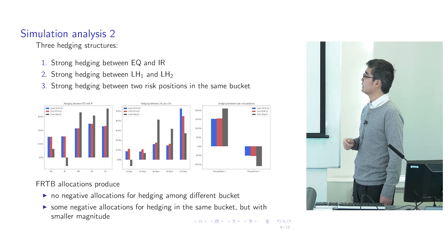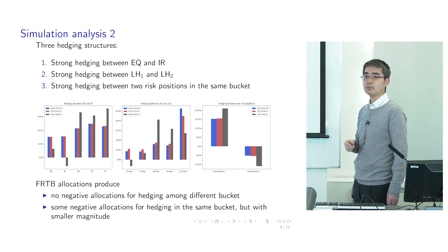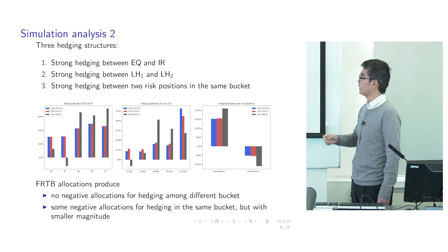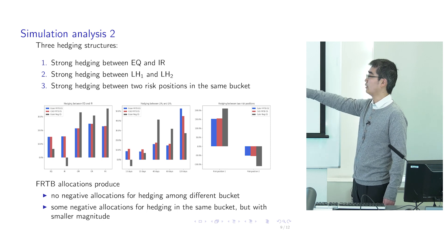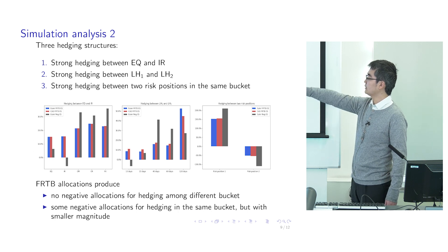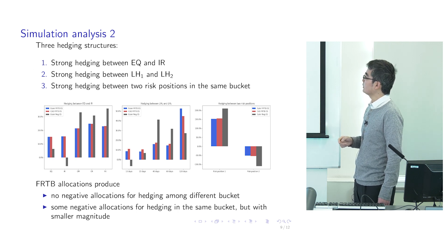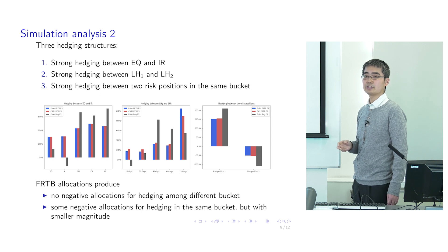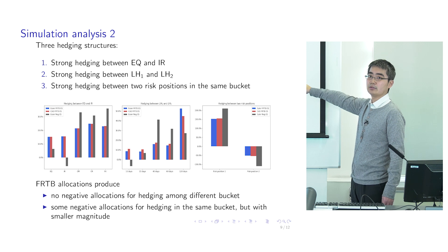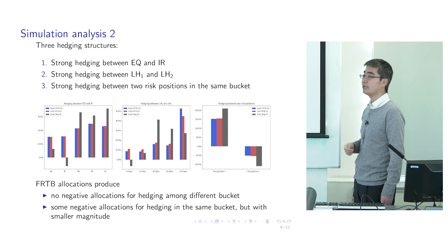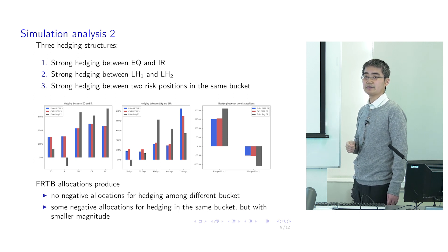The first two results show that under the FRTB, even though you may have hedging among different risk factor classes and liquidity horizons, our allocation method always produces positive allocation for hedging positions. Under the current framework, the black bar shows it could produce negative allocation. If you have strong hedging within the same bucket, since the FRTB does not constrain hedging in such a situation, we could also produce negative allocation — but the magnitude is much less compared to the current framework, because negative allocation in certain buckets can be offset or cancelled by positive allocation in other buckets.